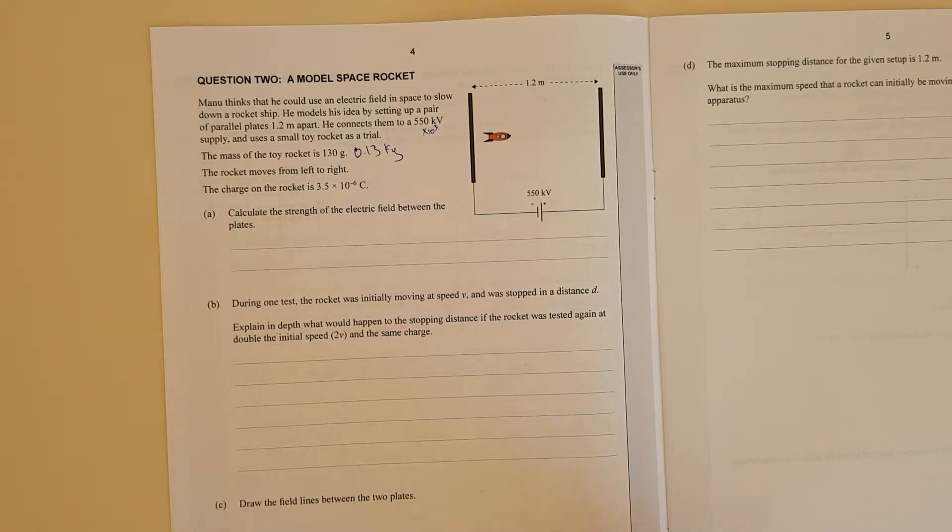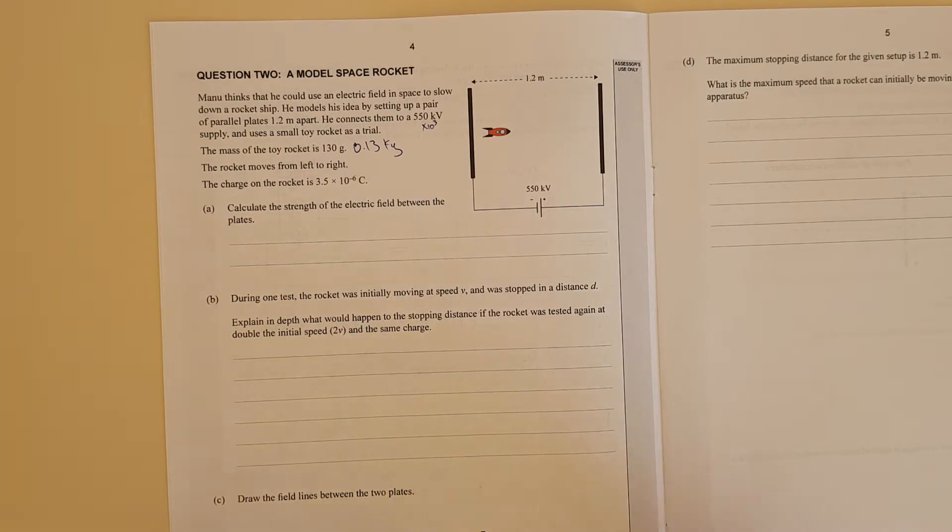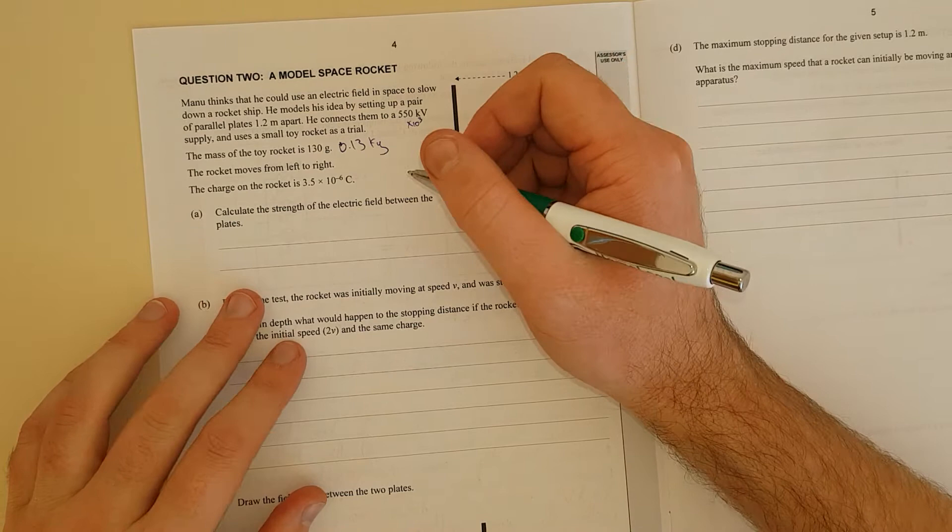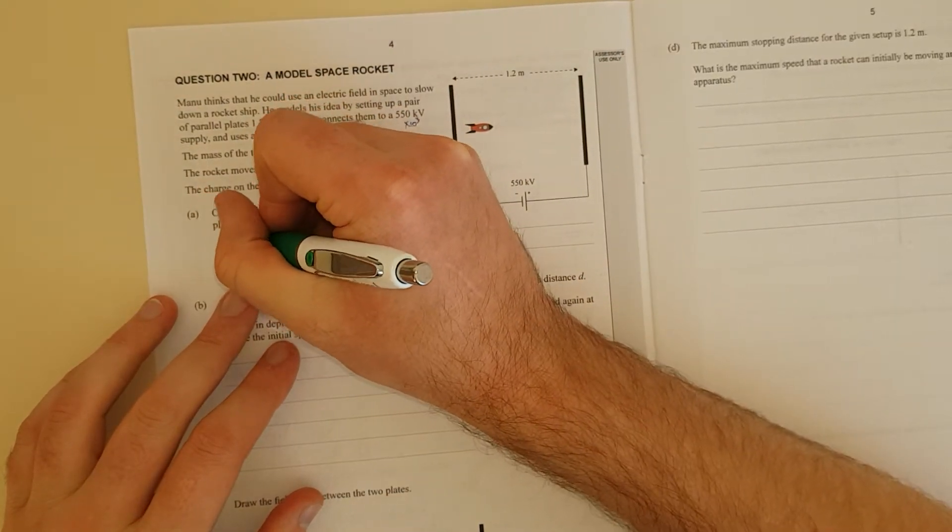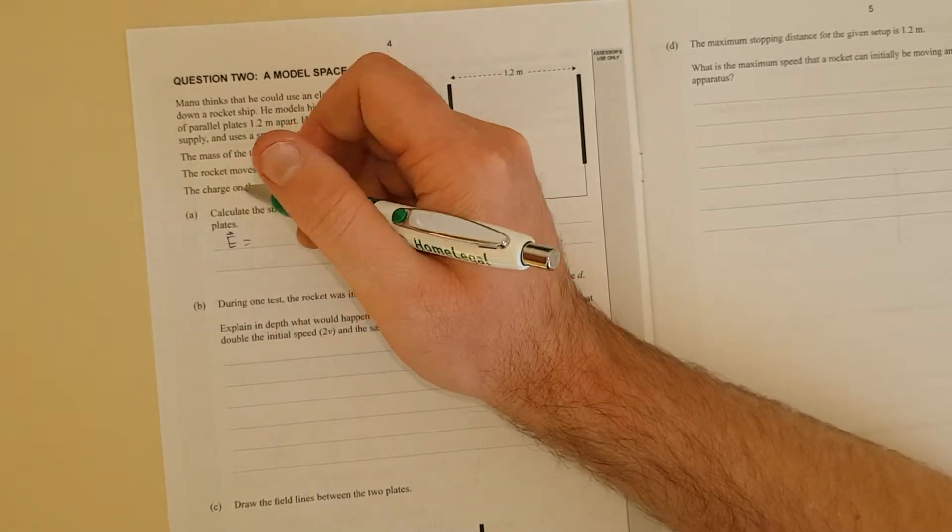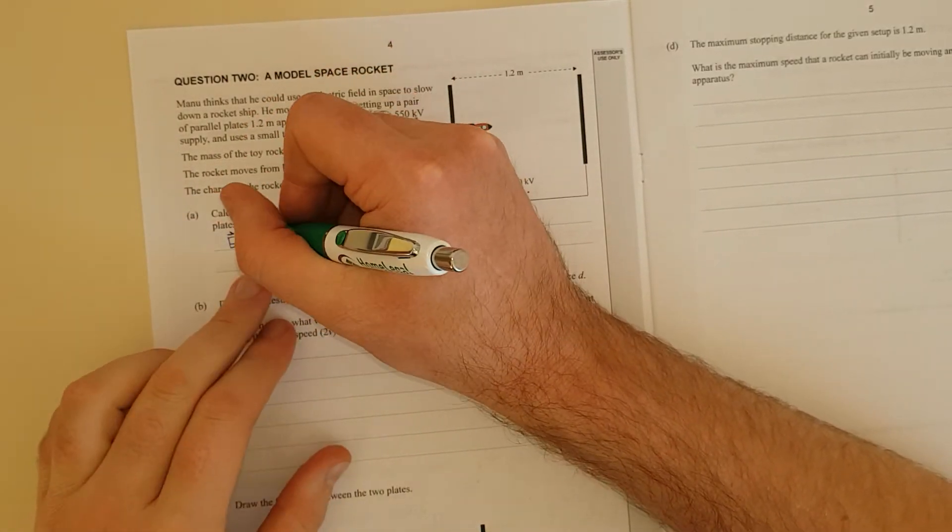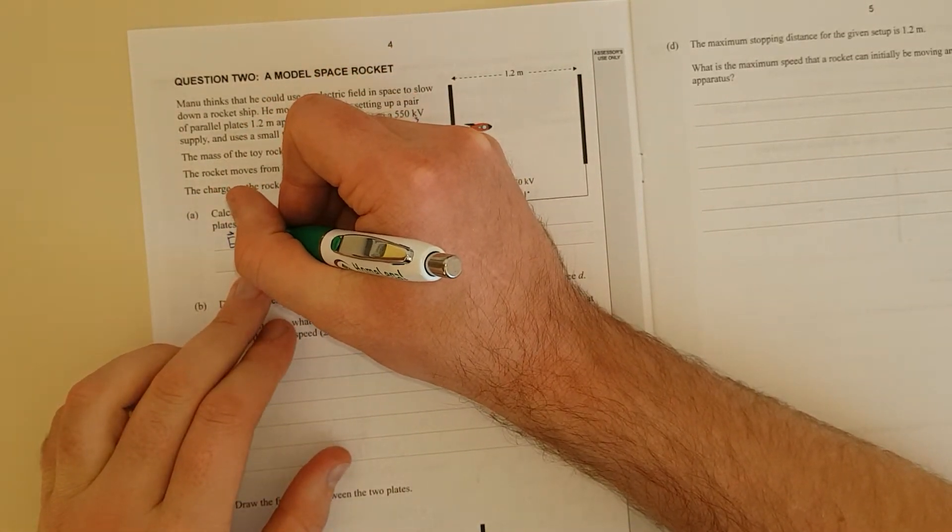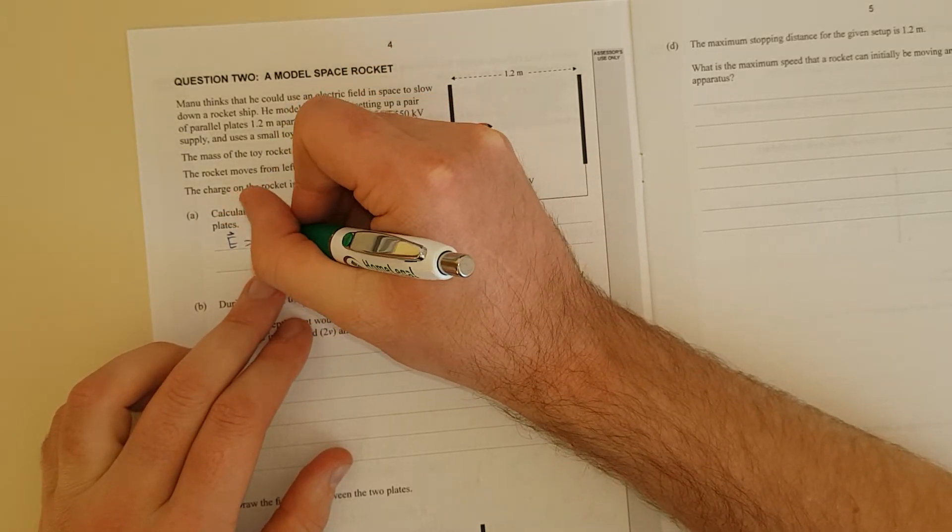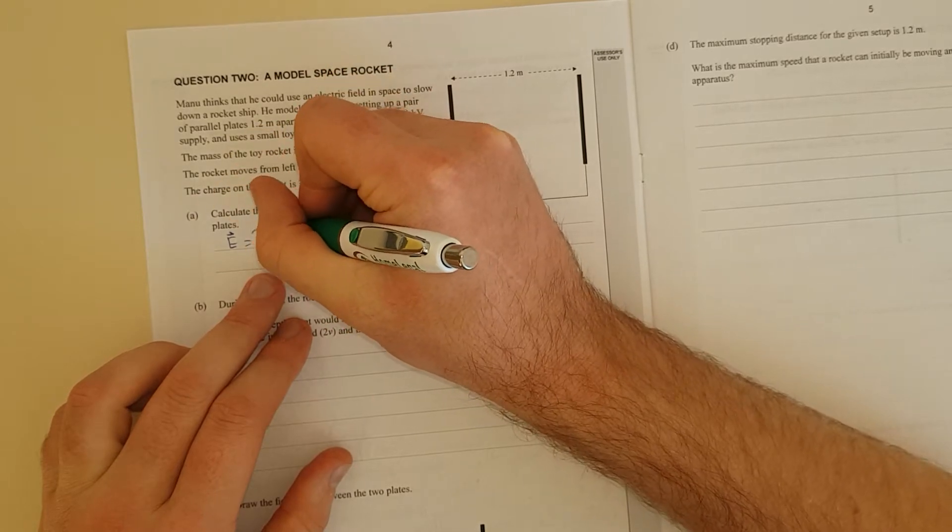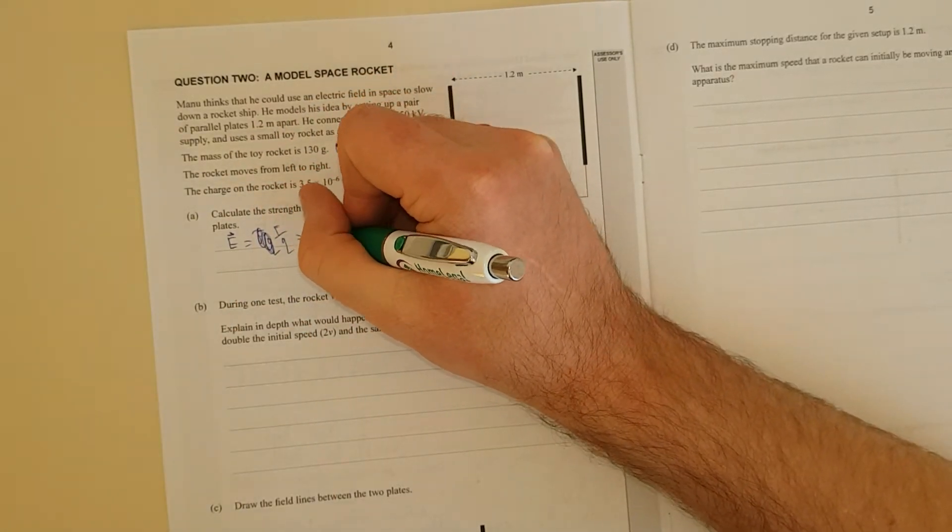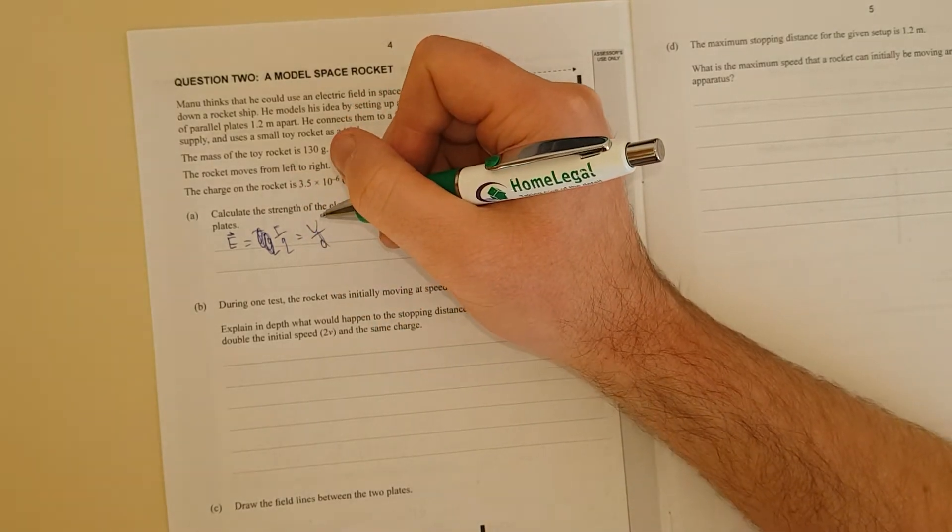Calculate the strength of the electric field between the plates. So on your formula sheet you should have the electric field as E and it's a vector quantity. It's not energy. The energy has got a delta in front of it, which is that funny triangle. And that is equal to F/Q, and it's also equal to V divided by D.